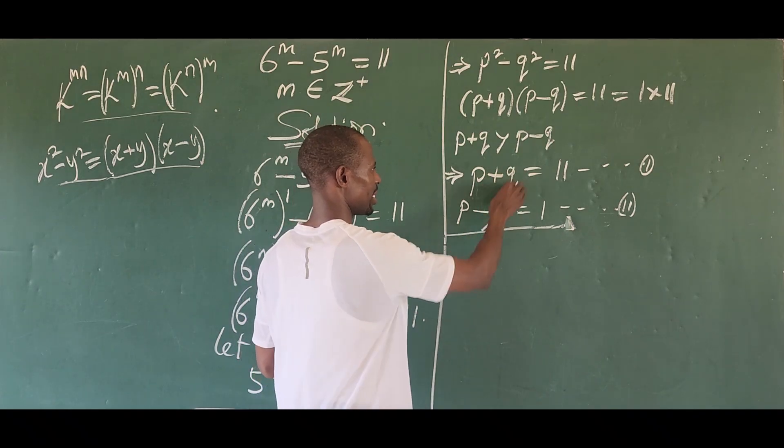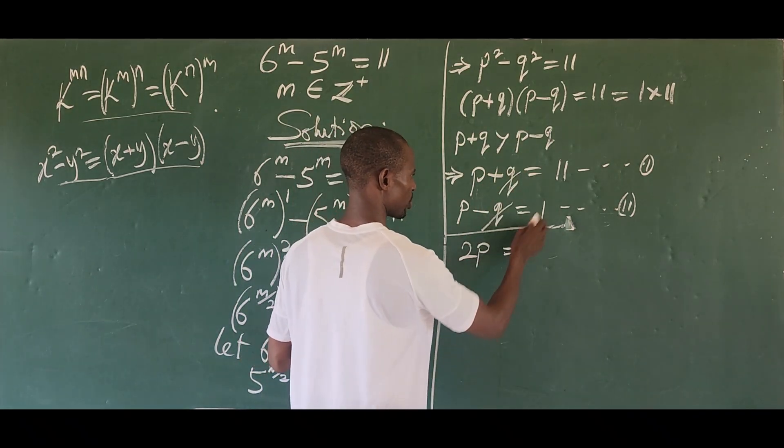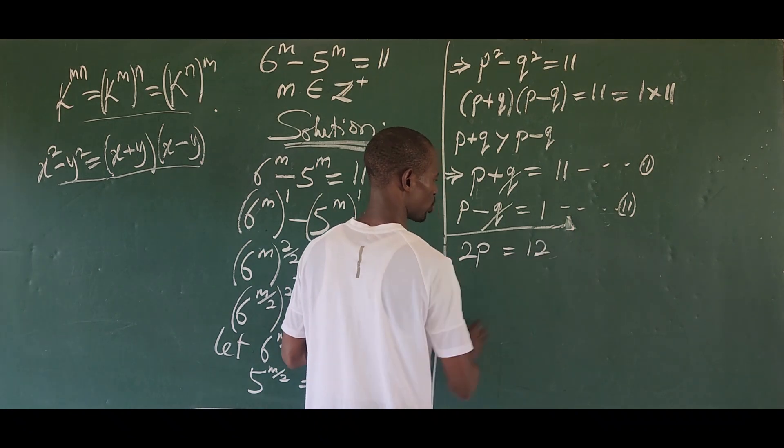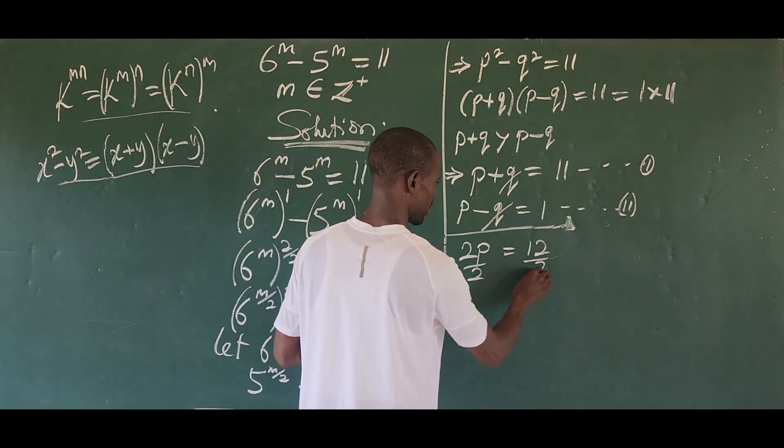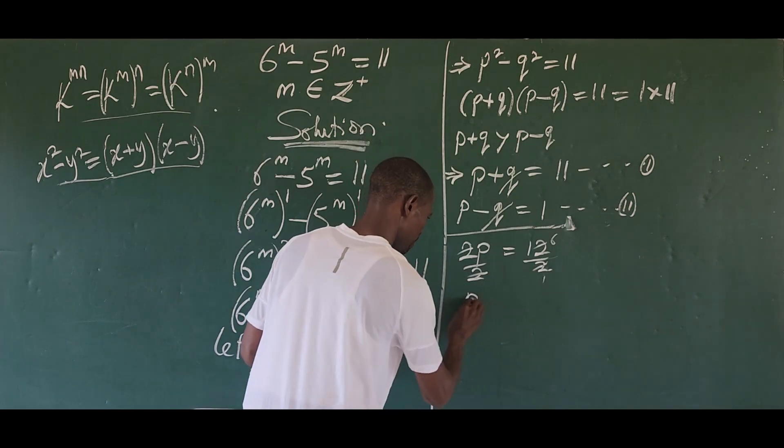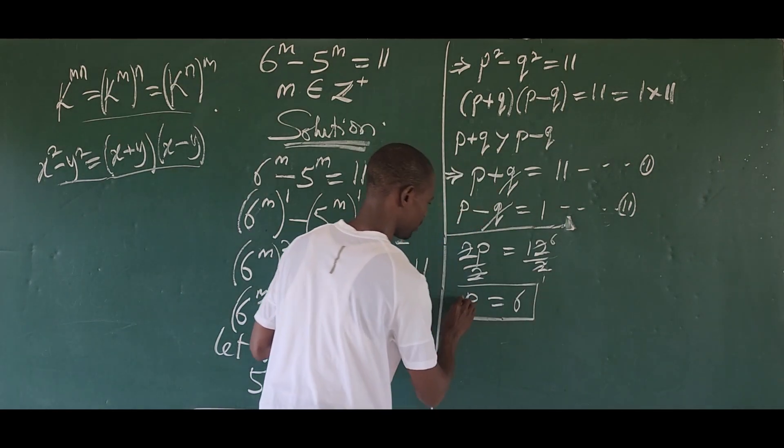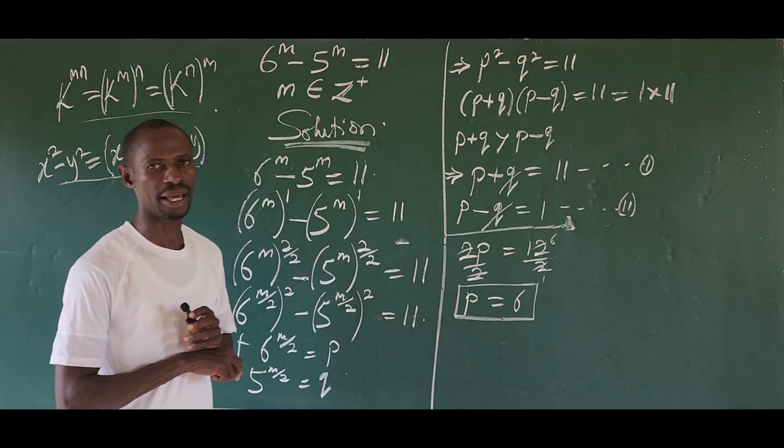If we add this, this will leave the system and we are left with 2p is equal to, we add this together, we give us our 12. Divide by 2, we divide by 2. Cancel, cancel out. Here we have 1, here we have 6. So we have p is equal to 6. So we've gotten the value of p to be 6 already.